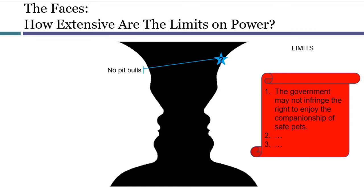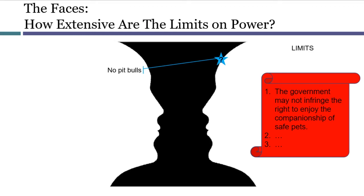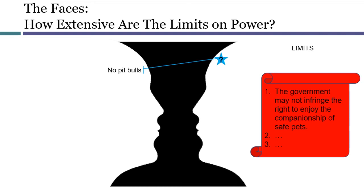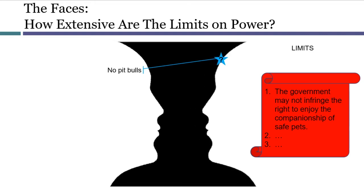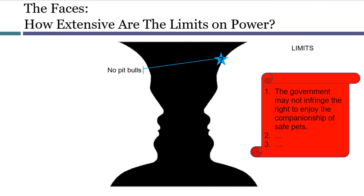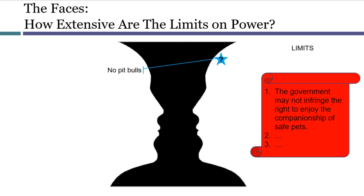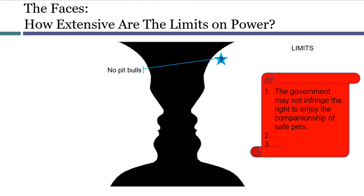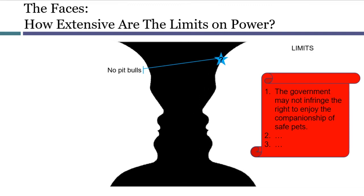The limits conversation hinges on different constitutional language altogether — defining completely different terms like 'companionship,' 'safe,' and 'pets.' This constitution also protects the rights of people to enjoy the companionship of safe pets. We're thinking not about what power would be good for the government to have, but what rights it would be good for people to have. The outcome of this conversation can be envisioned as the face getting larger. So if there's a source of power, it still can't be used in a way that violates this particular limit, which in this example we might have decided is a little bigger than we thought before.